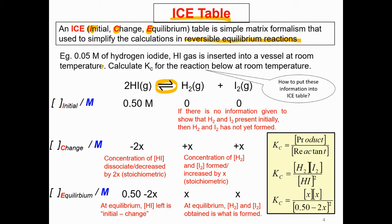The question starts with 0.05 molar of hydrogen iodide inserted into a vessel at room temperature. Calculate the Kc for the reaction at room temperature. Information is given, but how to put this information into the ICE table? Let's do it one by one, starting with Initial first. The molarity unit M is used.